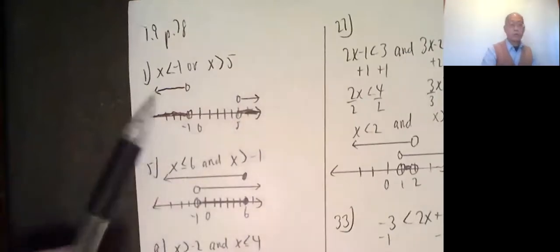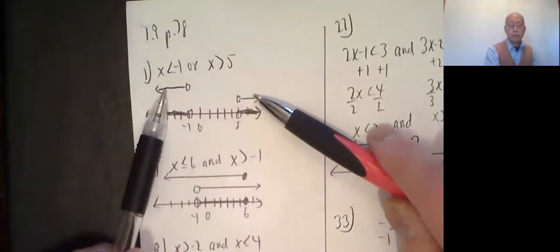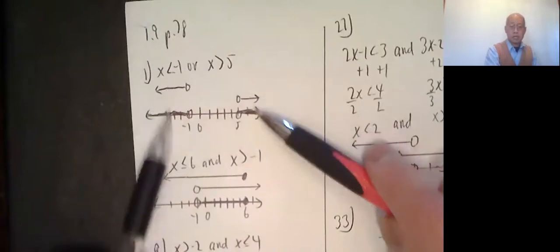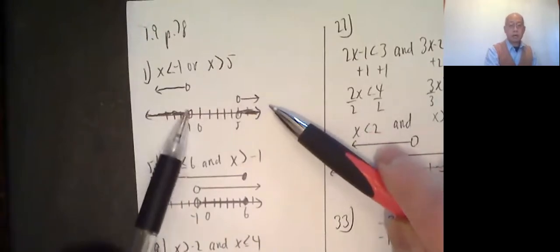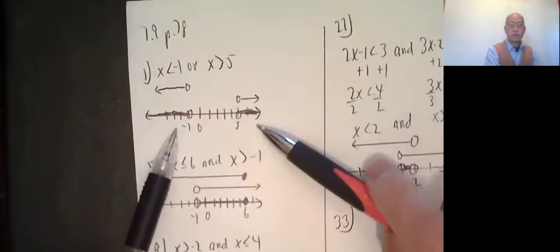And since we're connecting with the word or, I shade all of this and all of this, both. Those are points that are either in here or in here. So I just kind of bring these both down to the number line. Open circle, shade left. Open circle, shade right on negative 1 and 5, respectively.